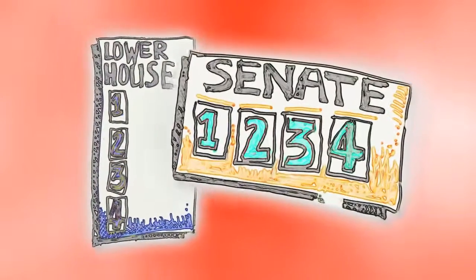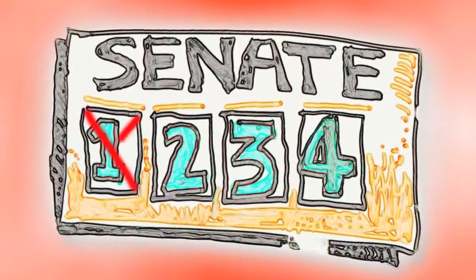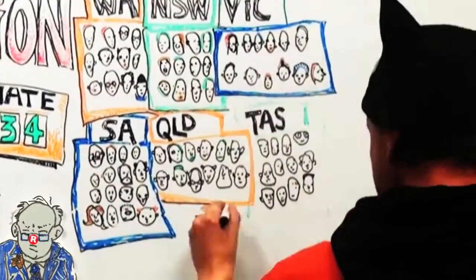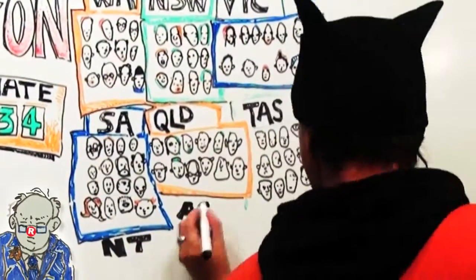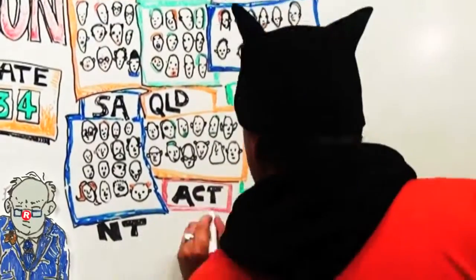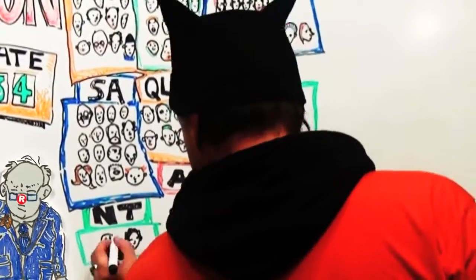Did you know you could vote for a different party in the Senate to hold the Majors to account? The Senate is made up of 76 Senators — twelve are elected from each state, and two each for the Territories.